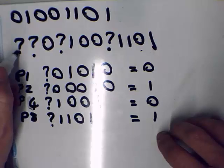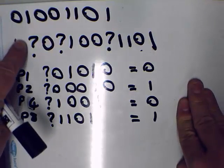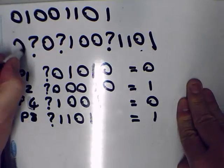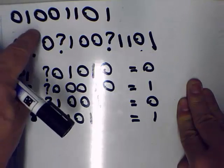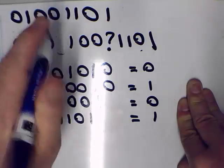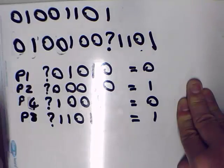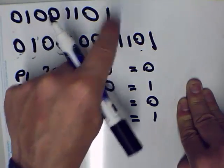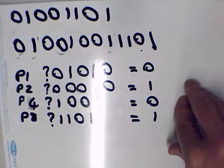Now we simply insert these calculated values where the parity bits would be. At parity position 1, we'll use the 0. At parity position 2, we use the 1. At parity position 4, we insert our 0. At parity position 8, we use our 1 that we calculated. And there we have our data that will be sent.